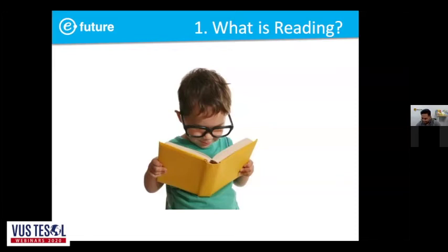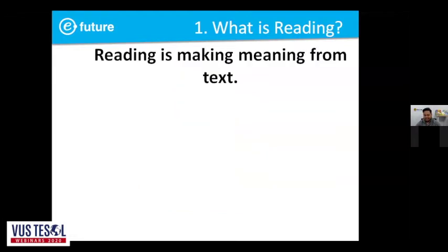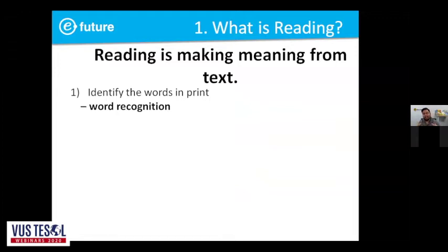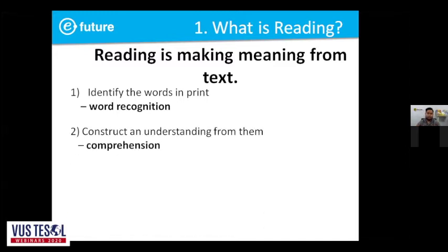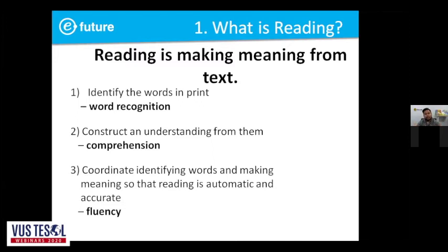Use eyes to travel around the words and interpret the meaning. So reading is making meaning from text. There are three main points: first, identifying the words in print — that's getting word recognition, like your vocabulary. Once you can read and understand the words, you move on to comprehension — constructing understanding from them. And then bringing it all together by practicing fluency: are you reading accurately? How automatic are these words? That's what reading is.